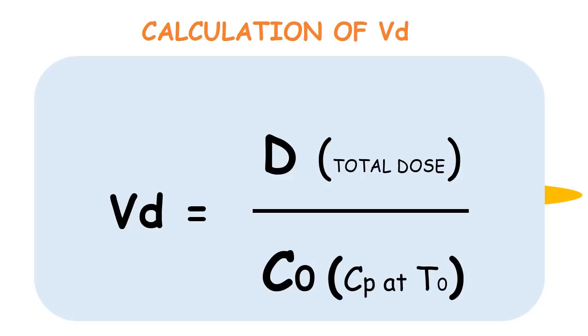So another thing to consider here is that if we give a large dose of a drug, which is the numerator in this equation, but interestingly find the plasma concentration, that is the denominator, to be very low, we are going to get a very large volume of distribution.